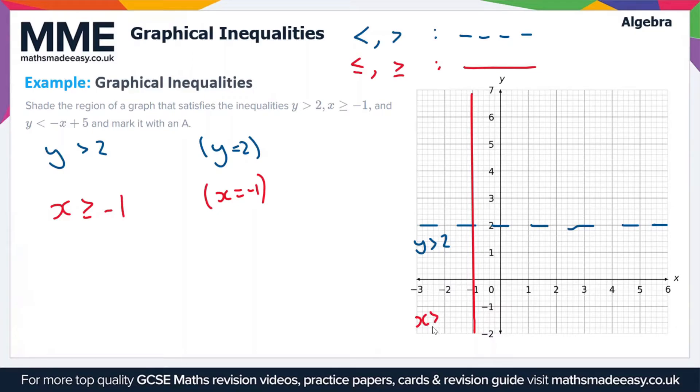So the final line that we're going to draw is y is less than minus x plus 5. And so this is effectively in the form y equals mx plus c. So we're going to draw the line y equals minus x plus 5. But here again we've got a strict inequality, so this has to be a dashed line. But the line itself is going to go through 5 on the y-axis - that's the y-intercept - and it's going to have a gradient of minus 1.